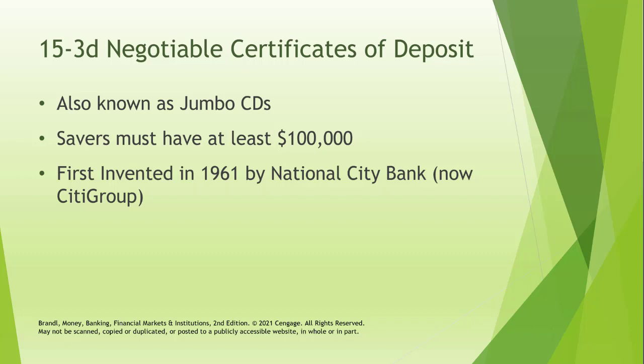Next are negotiable certificates of deposit, or negotiable CDs, sometimes referred to as jumbo CDs. You must have at least $100,000 to put into one of these. They were first invented in 1961 by National Citibank, now part of Citigroup. These are traded among banks — for instance, a bank that has issued a jumbo CD may sell that asset on to fund other activities and buy it back later, using it as a balance sheet management tool.